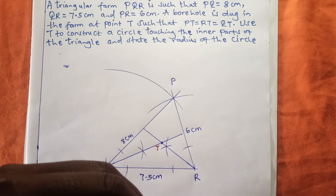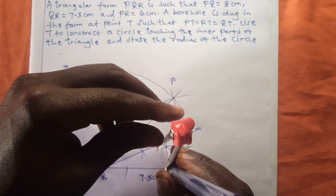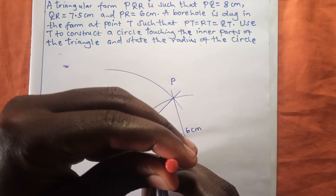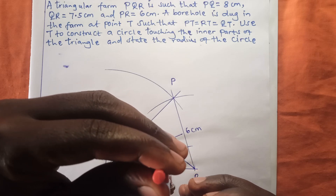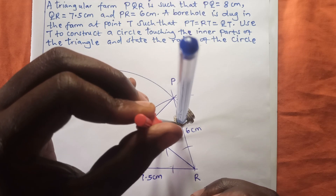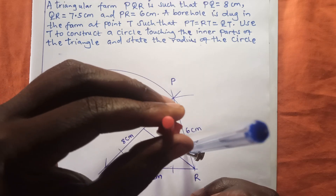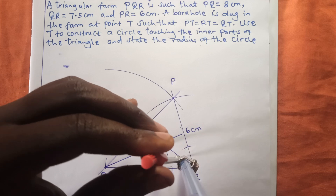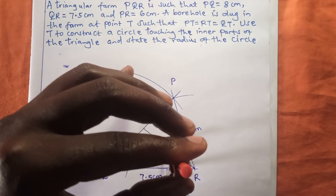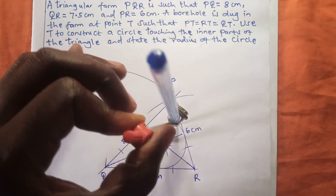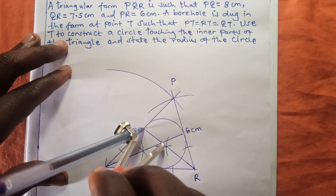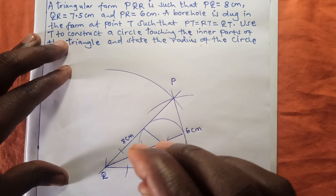Having obtained point T, I will use my pair of compass, stand at that point, and adjust it to touch one of the sides of this triangle. Then I am going to draw a circle inside the triangle. This is the circle and it is going to touch the three sides of the triangle.